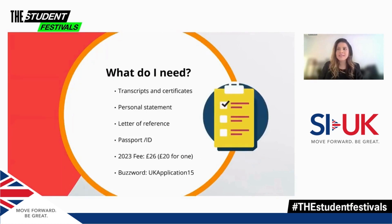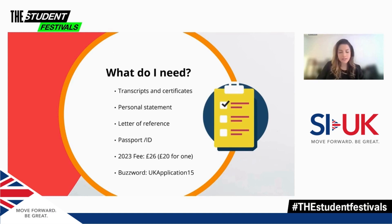This is the section of the presentation where I'd recommend you pull out a pen and paper or take a photo of the screen, because it covers all the basic things you will need to kickstart your application. Starting with your high school or undergraduate transcripts and certificates. Even if you don't get your certificate until you graduate, your transcript or predicted grades can help you get a conditional offer from a university.